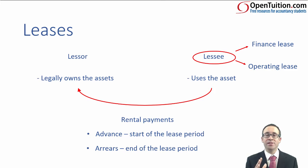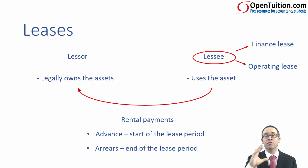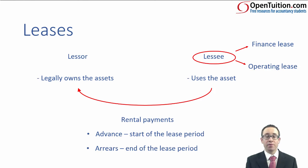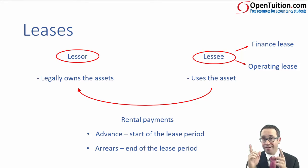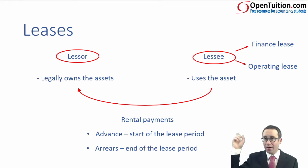The key point is that at F7 level, you accounted for a finance lease and an operating lease from the lessee's perspective. Hopefully that sounds familiar, because what we have to look at now is the lessor — the person who legally owns the asset — and we now need to look at their accounting as well.